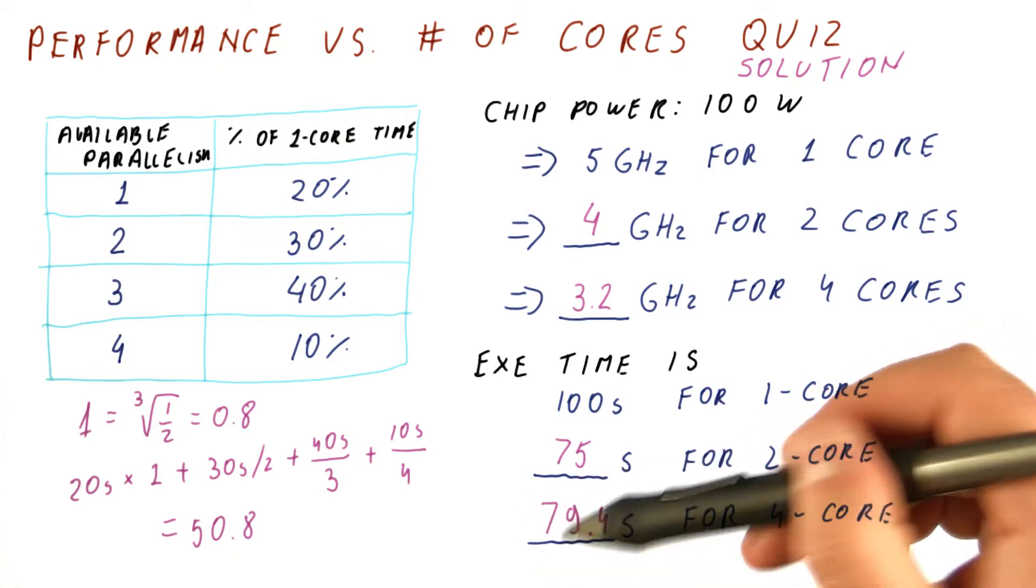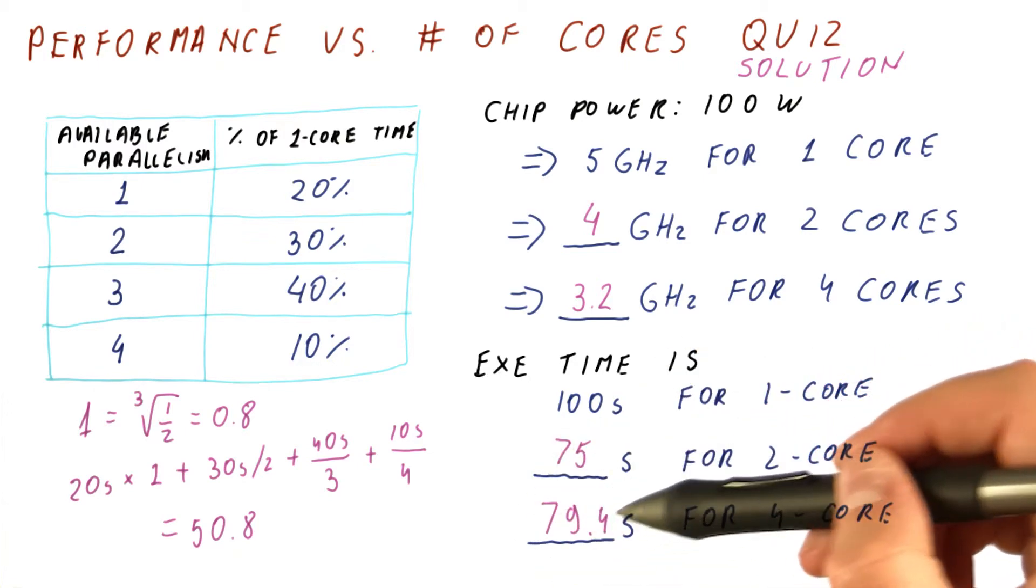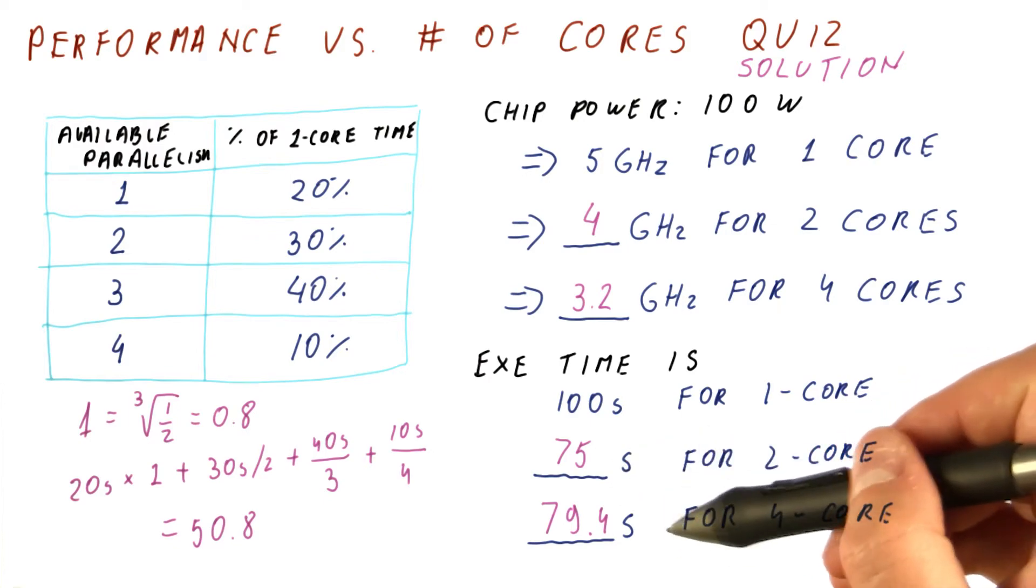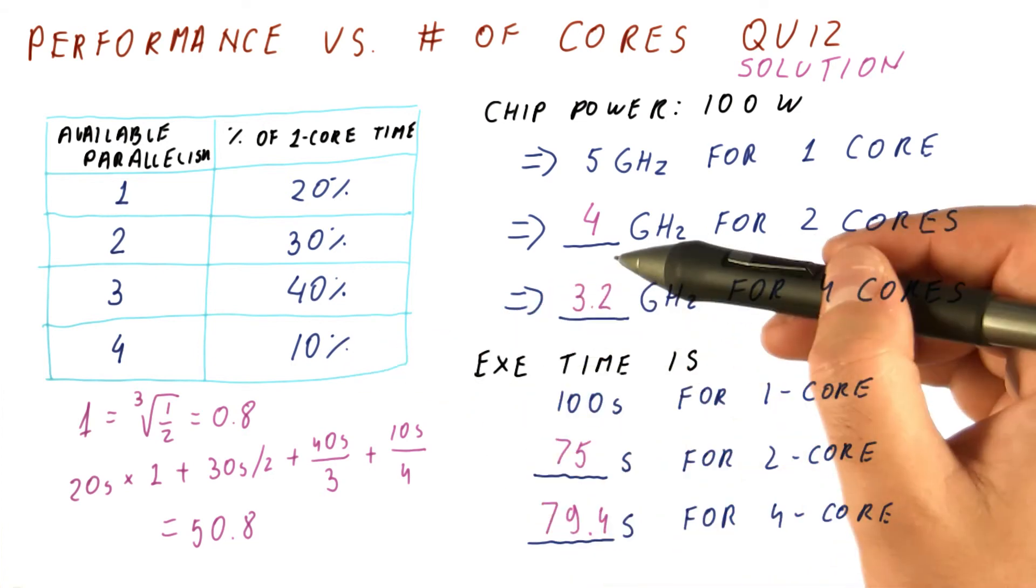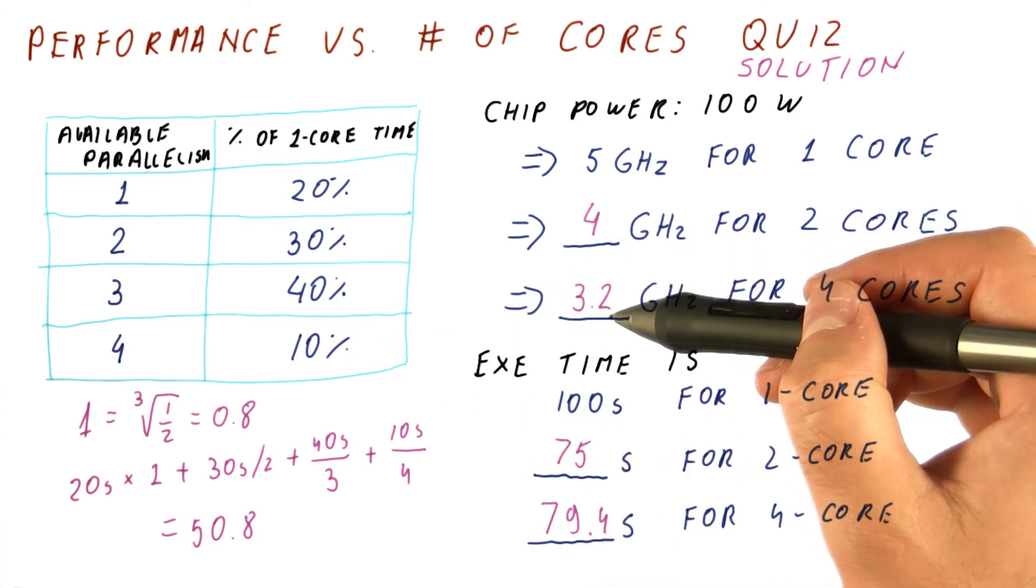Which is actually slower than a 2 core execution. So as you can see, although the 4 core execution gets some more parallelism exploited, it's not enough to make up for the loss in performance due to frequency change.